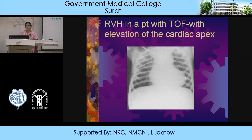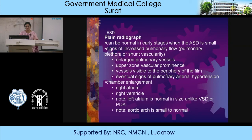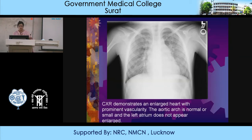ASD on a plain X-ray can be normal in the early stages when the ASD is small, or there may be signs of increased pulmonary flow: enlarged pulmonary vessels, upper zone vascular prominence, vessels visible to the periphery of the film, and eventual signs of pulmonary arterial hypertension. ASD leads to right atrial and right ventricular enlargement. Note that the left atrium is normal in size, unlike VSD or PDA, and the aortic arch is small to normal. This case of ASD shows an enlarged heart with prominent vascularity in both lung fields, a normal or small aortic arch, and no left atrial enlargement.